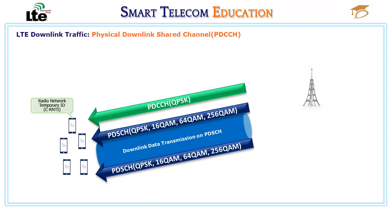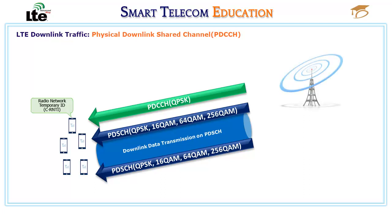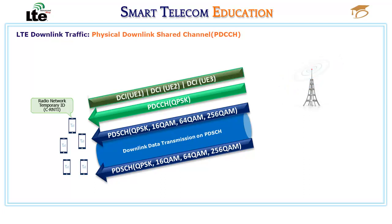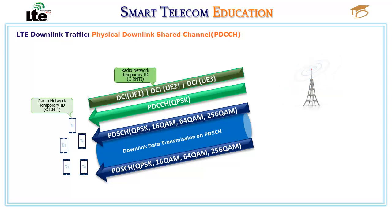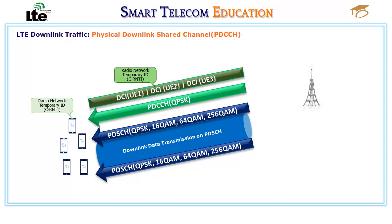Each UE is assigned a cell-specific radio network temporary ID (CRNTI) when it first accesses the network. This CRNTI is used to identify which users have data in the PDCCH. Each UE scans the contents of the PDCCH for downlink control information (DCI) associated with its CRNTI. If there is a match, the corresponding allocation information tells the UE where to look in the PDSCH and how to decode the data.